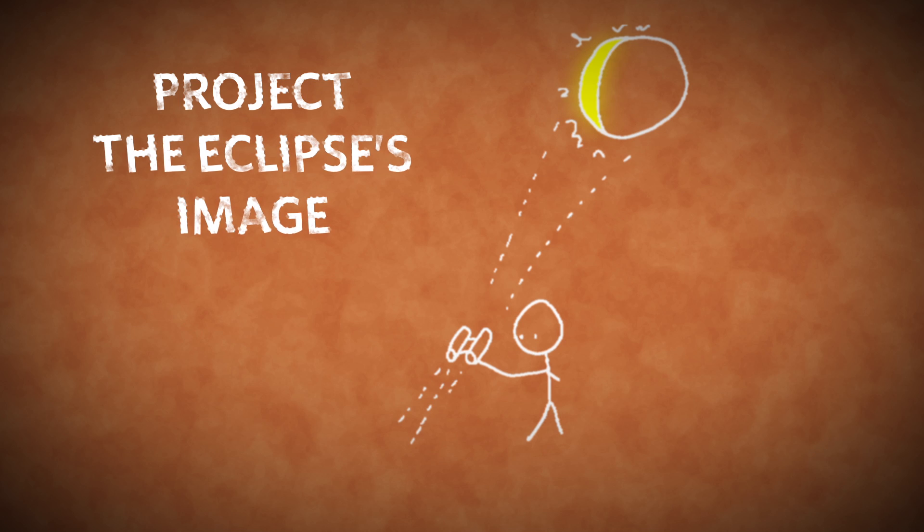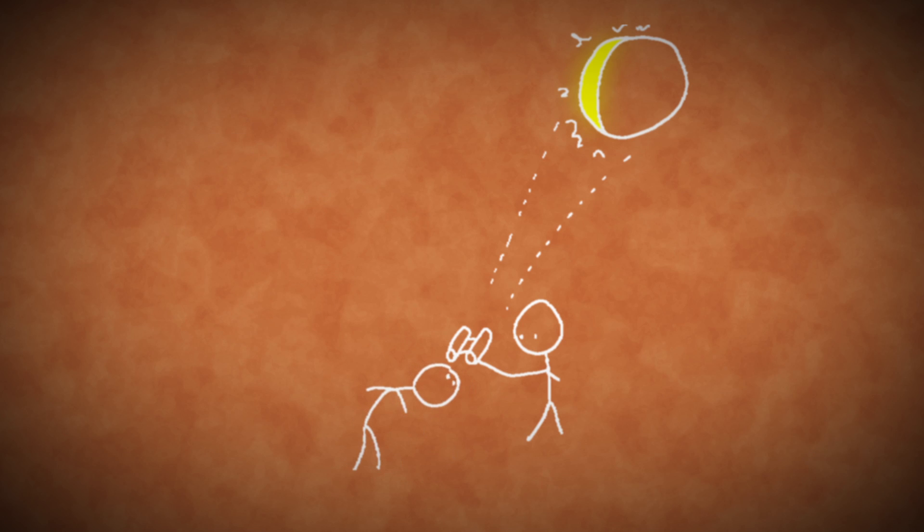The safest way to observe the eclipse is to project its image through either a telescope or a pair of binoculars focused to produce a sharp image. Remember, do not let anyone look through the device at the sun while you're doing this.